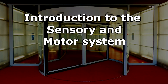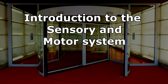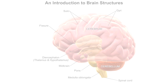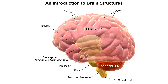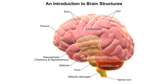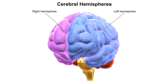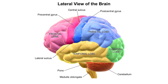Learning with the Illuminati. Introduction to the Sensory and Motor System. The uppermost region of the central nervous system, called the cerebrum, can be divided into two hemispheres, each containing specific distinctions referred to as lobes.